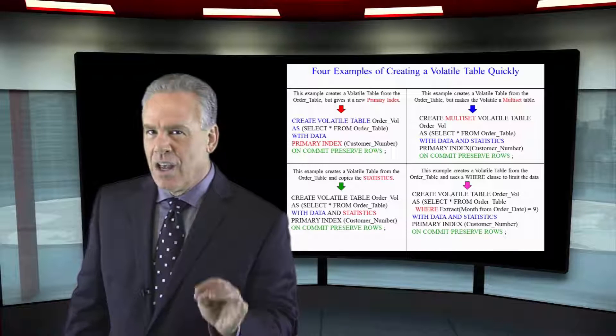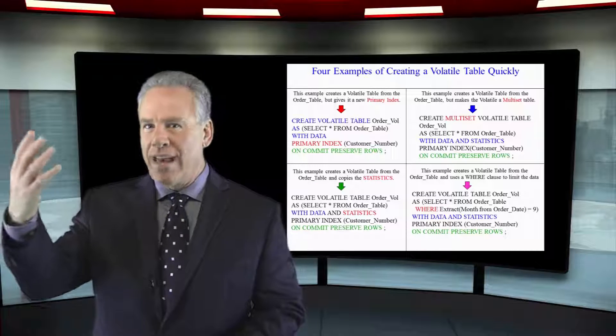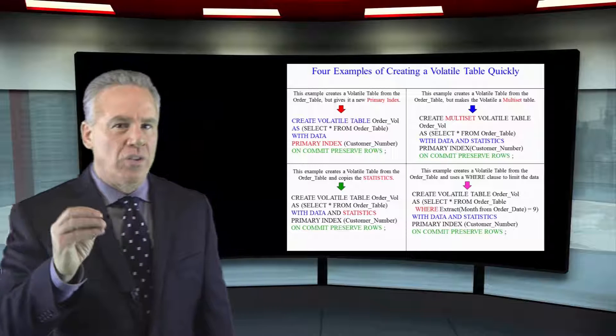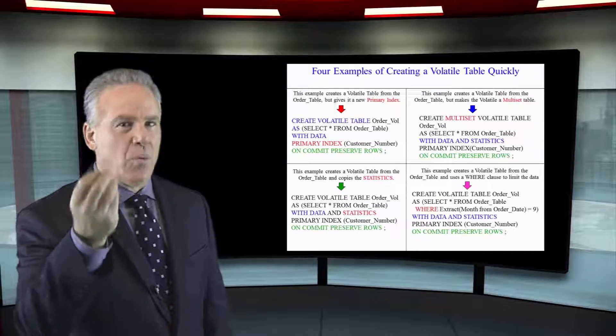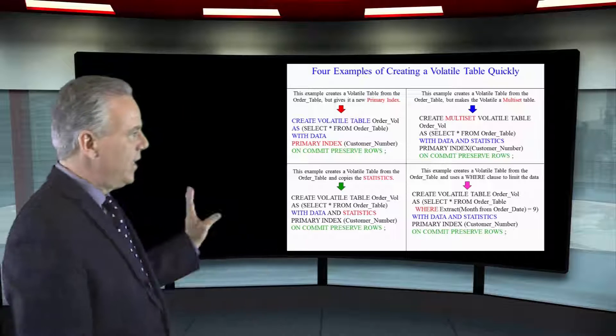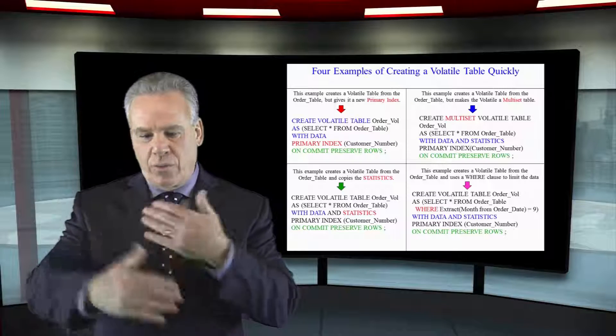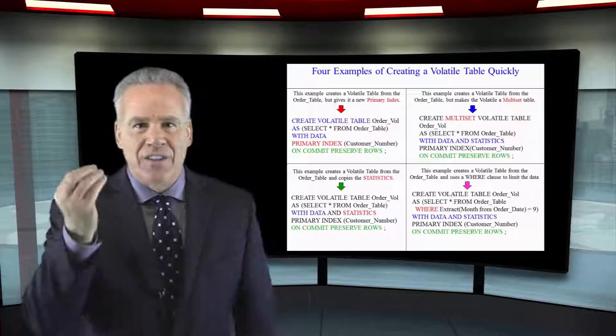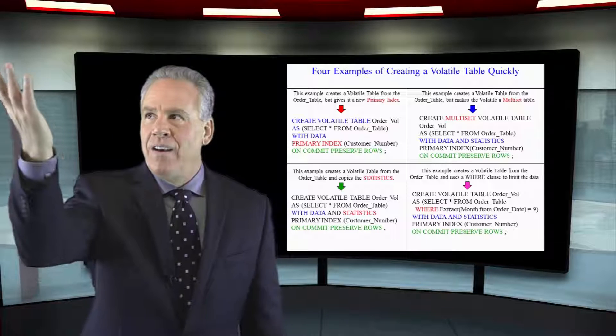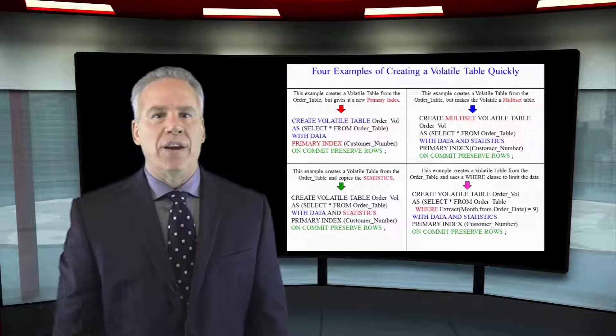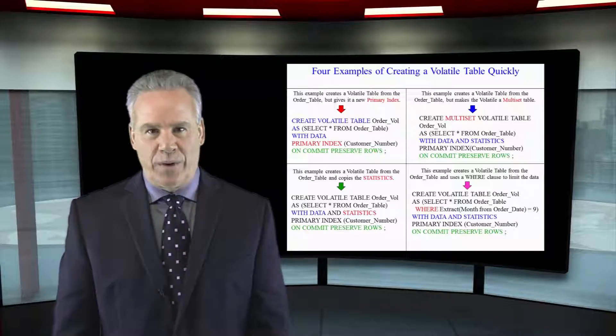Now those statistics, since I'm not bringing all of that data with me, they'll be called zeroed statistics. When I then say collect statistics on my volatile table, it'll actually run through, look at all the data, collect statistics on the same columns of the original table in a very clever four ways of doing things.